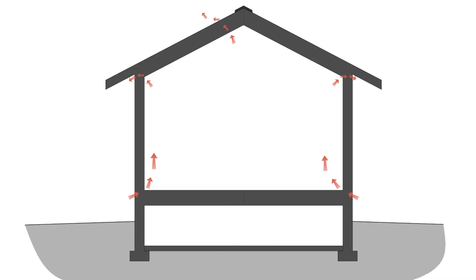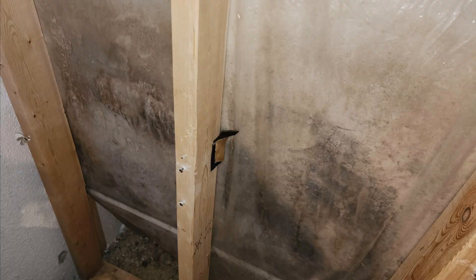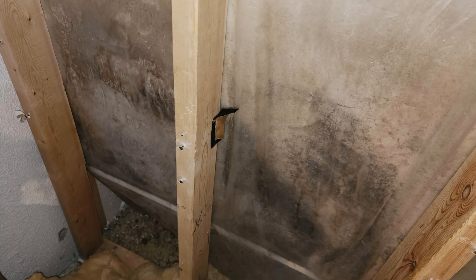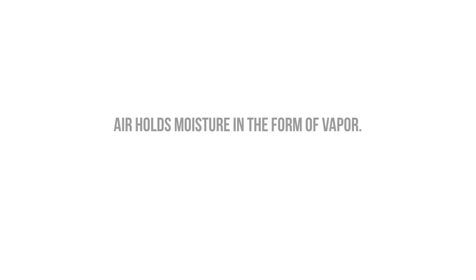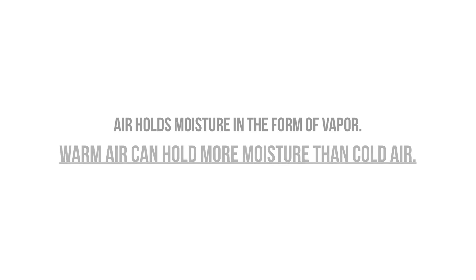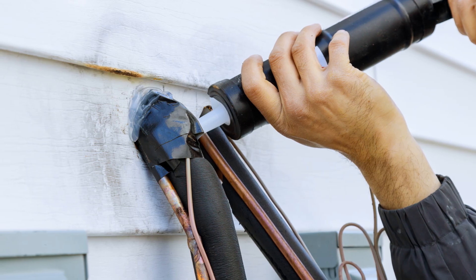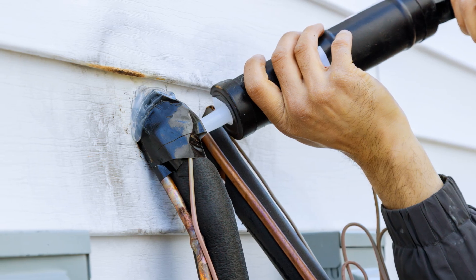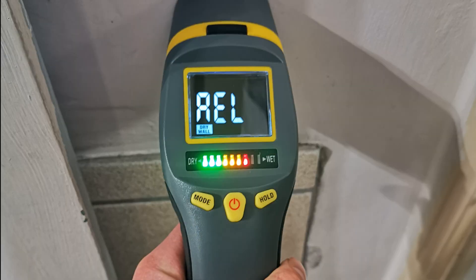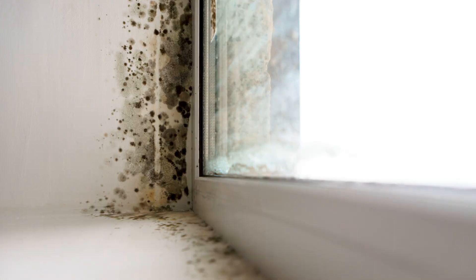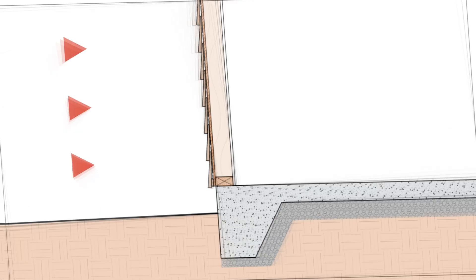Air leakage in and out of a building is the second leading cause of moisture-related issues like condensation and mold growth, after bulk water intrusion. Air has the capacity to hold moisture in the form of vapor, with warmer air being able to hold a lot more moisture than cold air. If we have air leaks in our building envelope, this can transport a lot of moisture into our building assemblies and raise the moisture content of the adjacent building materials, which can end up supporting mold growth and rot.